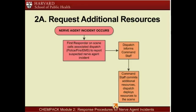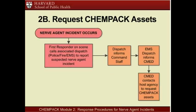Upon identifying a nerve agent incident, the incident commander may request ChemPAC assets through CMED or 911. Meanwhile, CMED initiates the process of mobilizing ChemPAC assets in response to the suspected nerve agent incident. Once CMED receives word that such an incident has occurred, they immediately contact the closest facility that hosts a ChemPAC container.